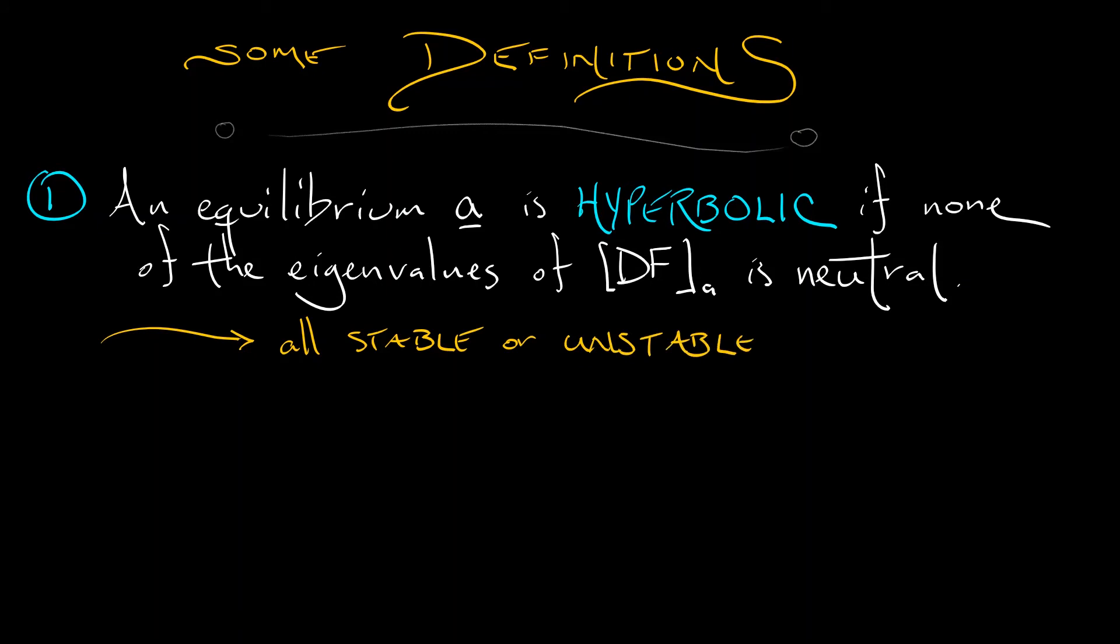Now this terminology is a little unfamiliar. The reason these are called hyperbolic stems from some deeper ideas in hyperbolic geometry. Don't worry about that right now. Just get used to calling an equilibrium hyperbolic if there are no degenerate eigenvalues.